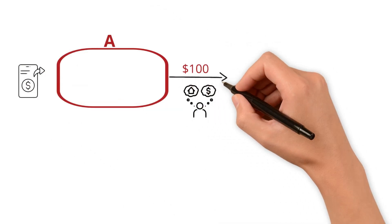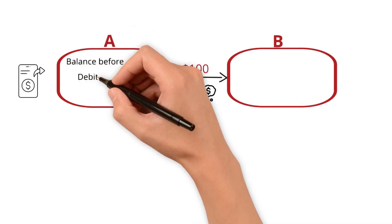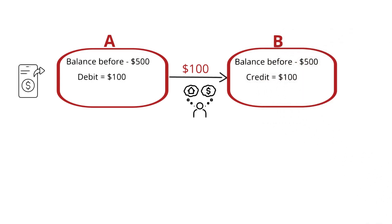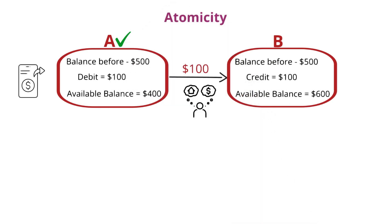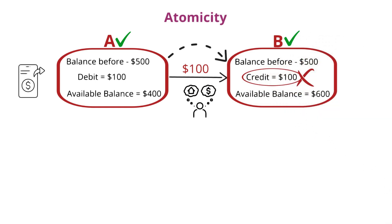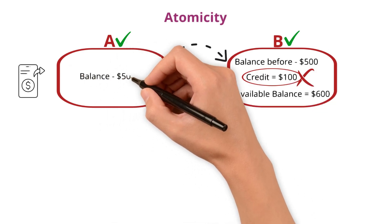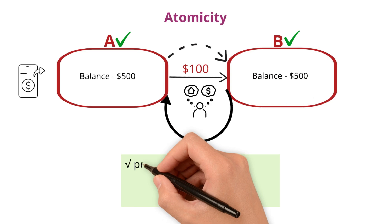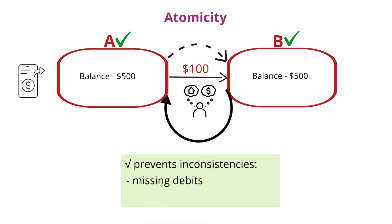Imagine transferring $100 from account A to B. This involves checking A's balance, debiting A, and crediting B. Atomicity ensures the entire transfer succeeds by completing all the steps, or fails if something goes wrong due to insufficient funds or a system crash — the transaction rolls back, leaving both accounts unchanged. This prevents inconsistencies like missing debits or phantom credits.